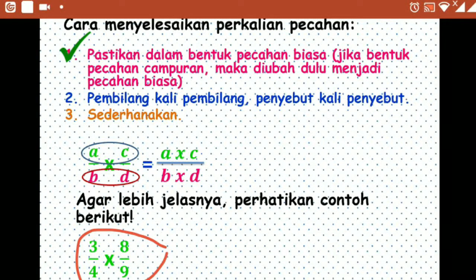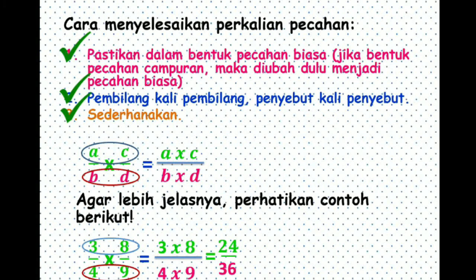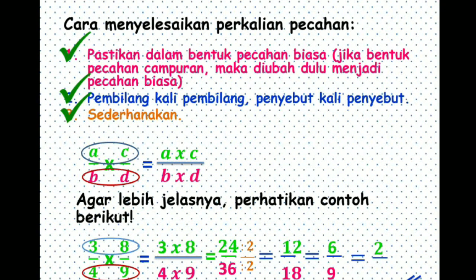Langkah kedua: pembilang kali pembilang, berarti 3 dikali 8. Penyebut kali penyebut: 4 kali 9. Hasilnya 3 × 8 = 24, dan 4 × 9 = 36. Masih bisa disederhanakan. Dibagi 2 menjadi 12/18, dibagi 2 lagi menjadi 6/9, dibagi 3 menjadi 2/3. Jadi hasilnya 2/3 — ini adalah bentuk yang paling sederhana.